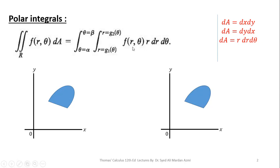This is the function whose integration has to be carried out. These are the limits of R and these are the limits of theta. Since R is our inner variable, the limits of R may be constant or variable, but the limits of theta are always in the form of constant real numbers — angles in radian measure in counterclockwise direction with the positive x-axis.